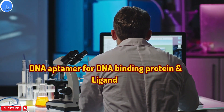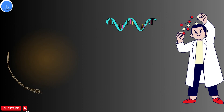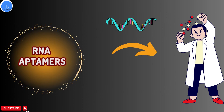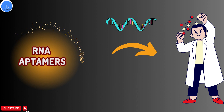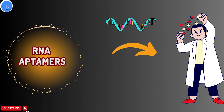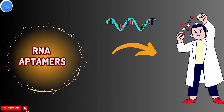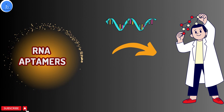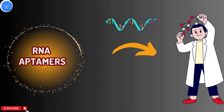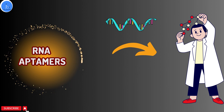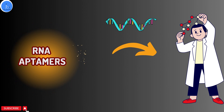If you are planning to work on RNA aptamers, then you have to perform RNA SELEX. RNA SELEX is similar to DNA SELEX but uses RNA molecules as the starting library. Here, you make your DNA library and convert it to the RNA library with the help of in vitro transcription. RNA SELEX is useful for identifying RNA-binding proteins and other ligands and for developing RNA aptamers.